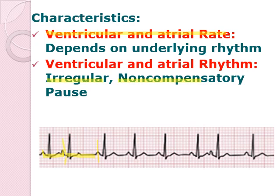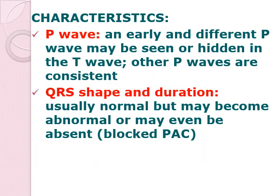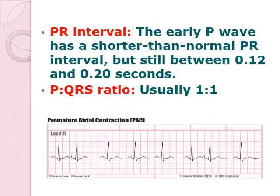In your P-wave, there could be an early and different P-wave. In your QRS shape and duration, it may be normal, but it may become abnormal or may even be absent. If it is absent, you are referring to it as a blocked premature atrial contraction. However, oftentimes if the problem is purely PAC, you will be seeing a 1-to-1 ratio for your P-wave and QRS complex. For the PR interval, the early P-wave has a shorter than normal PR interval, but still between 0.12 to 0.20 seconds, which is the normal range.